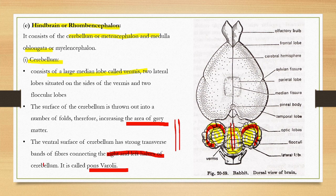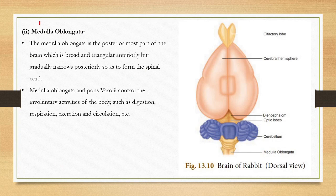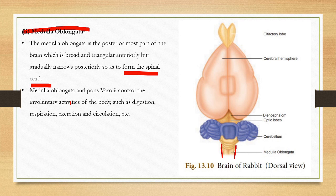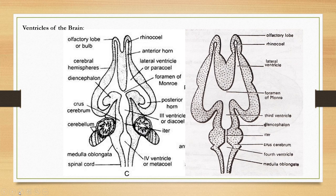The ventral surface of the cerebellum has a strong transverse band of fibers connecting the right and left half of the cerebellum, called the pons. The pons connects the right and left halves. The medulla oblongata is the posterior-most part of the brain, and together with the pons it controls the involuntary actions of the body such as digestion, respiration, circulation, and excretion.